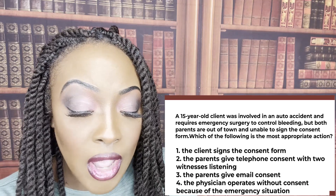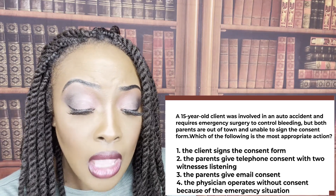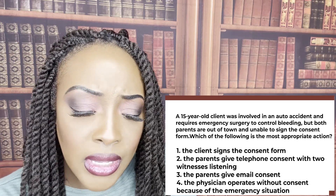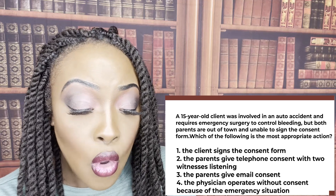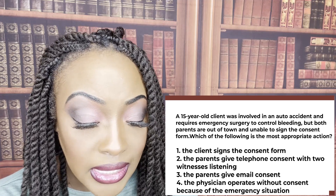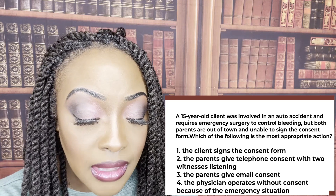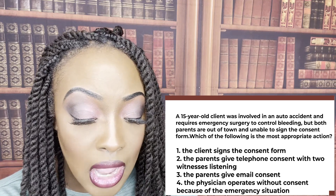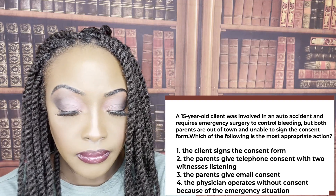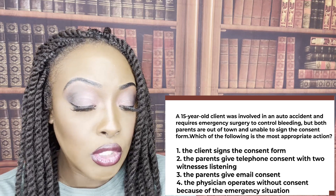A 15-year-old client was involved in an auto accident and requires emergency surgery to control bleeding, but both parents are out of town and unable to sign the consent form. Which of the following is the most appropriate action? One, the client signs a consent form; two, the parents give telephone consent with two witnesses listening; three, the parents give email consent; or four, the physician operates without consent because of the emergency situation. The correct answer is two.